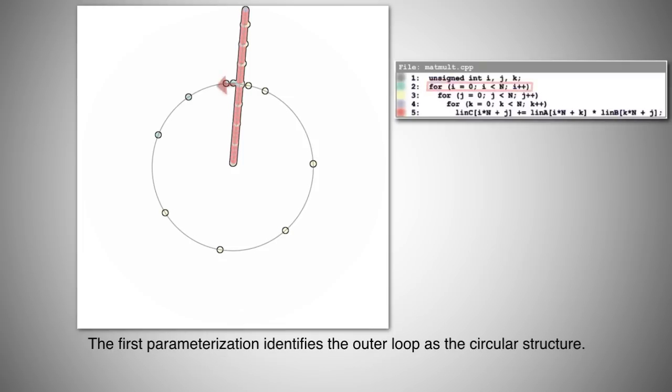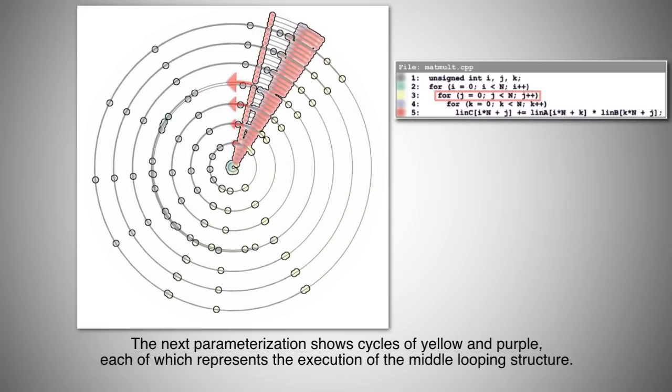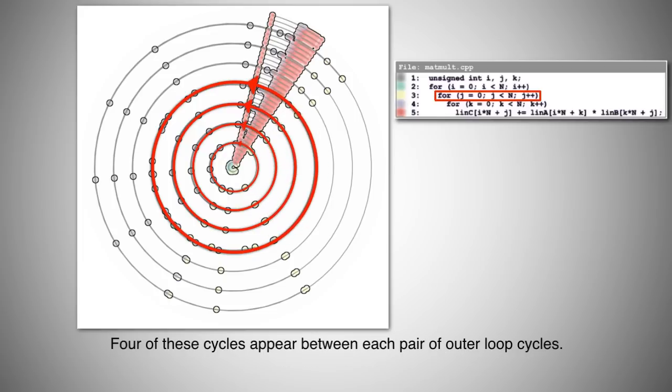The first parameterization identifies the outer loop as the circular structure. The next parameterization shows cycles of yellow and purple, each of which represent the execution of the middle looping structure. Four of these cycles appear between each pair of outer loop cycles.